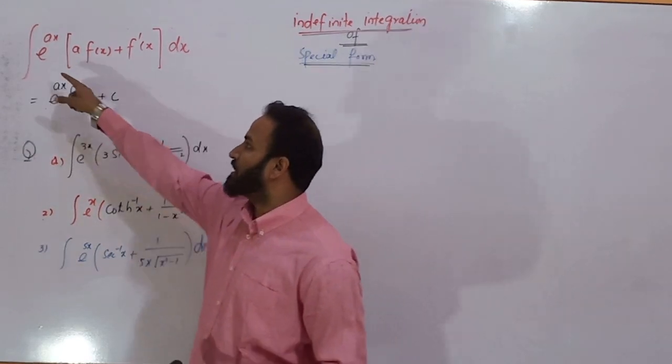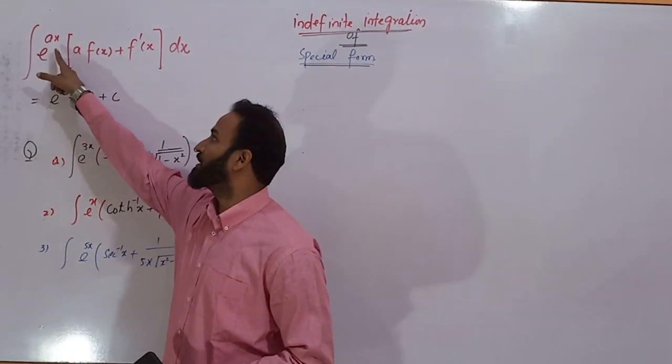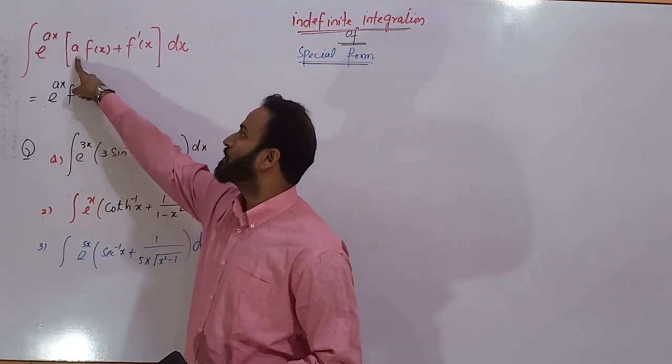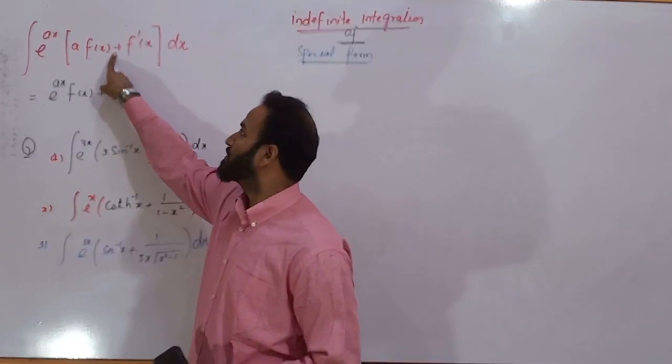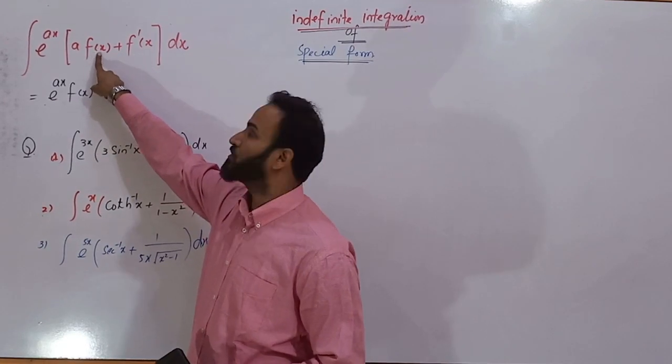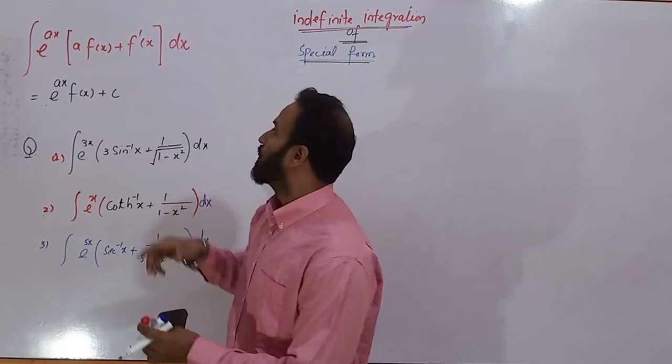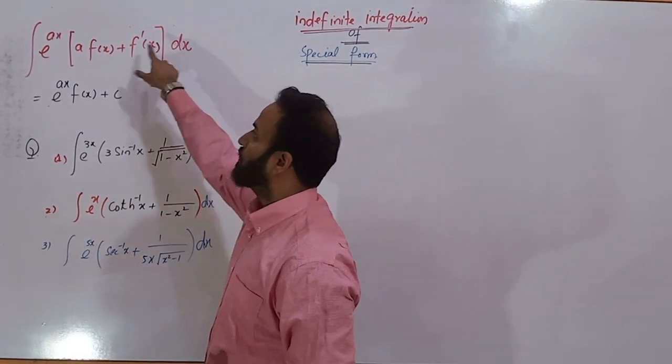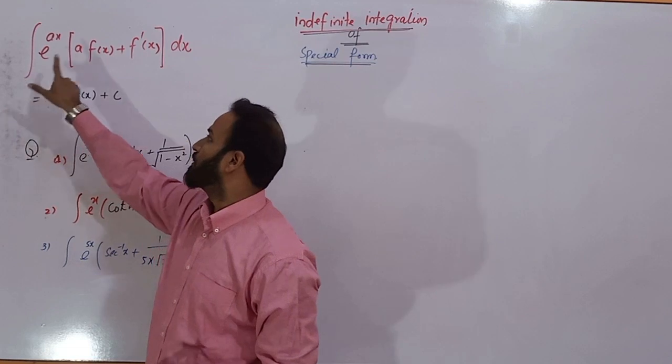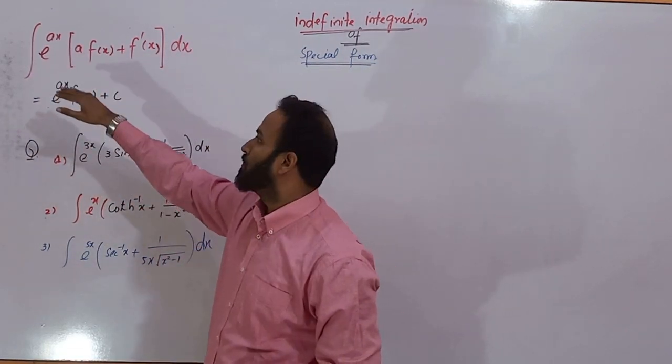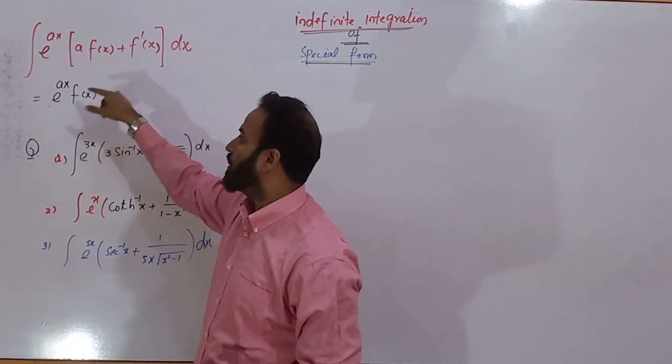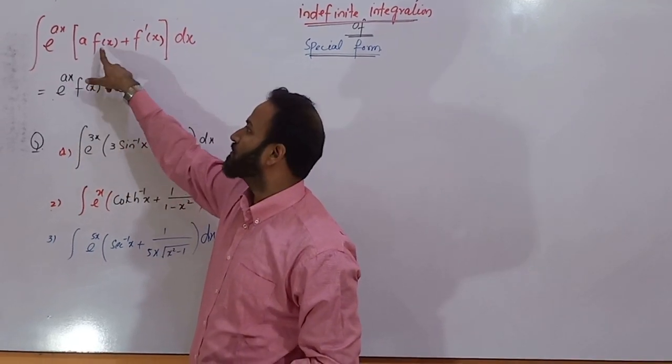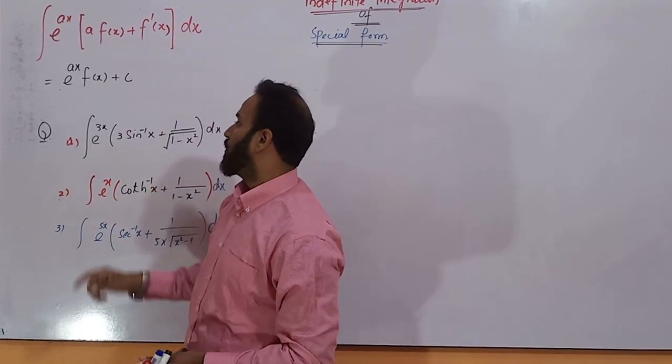What is the expression here? If there is exponential form e to the power ax and this constant quantity should be here with the function, plus the derivative of this function should be here, and the differential of this integration, then the final answer of all this expression will be e to the power ax multiplied by f(x), that function f(x).